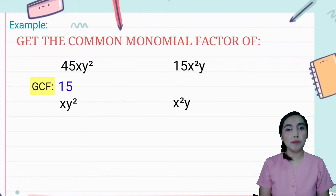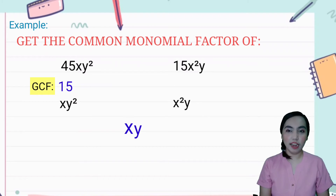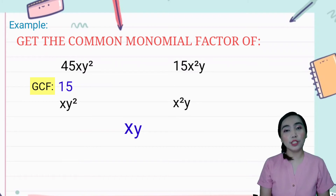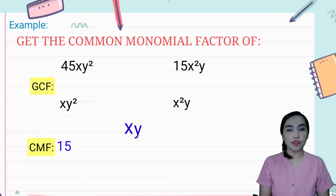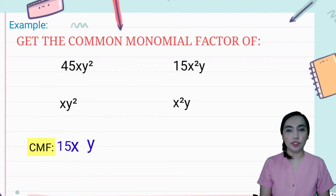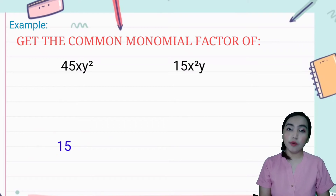In this case, sa x, magiging x na lang. And sa y, magiging y na lang. Bale, makukuha na natin yung kanilang CMF or common monomial factor, which is 15 from the numerical coefficient, and xy. So that is 15xy.